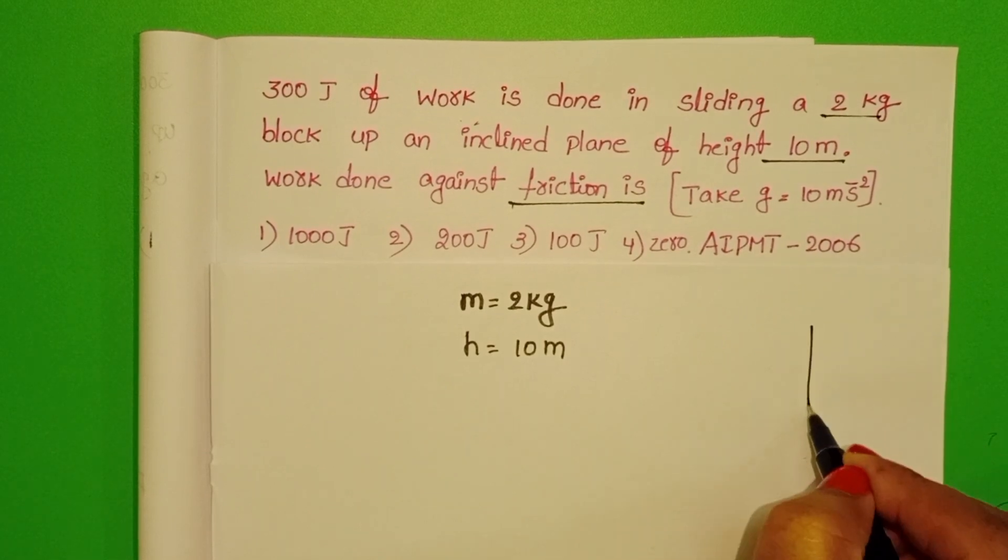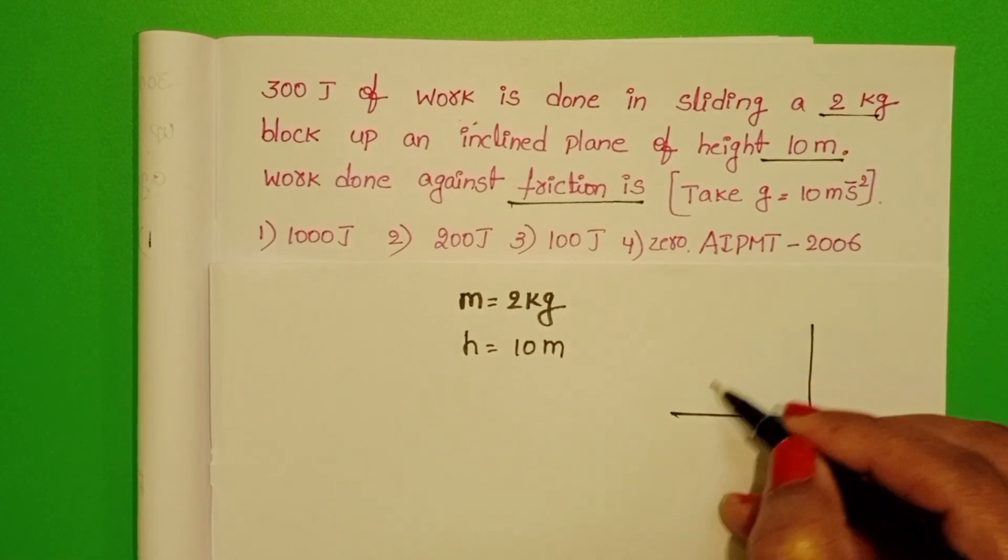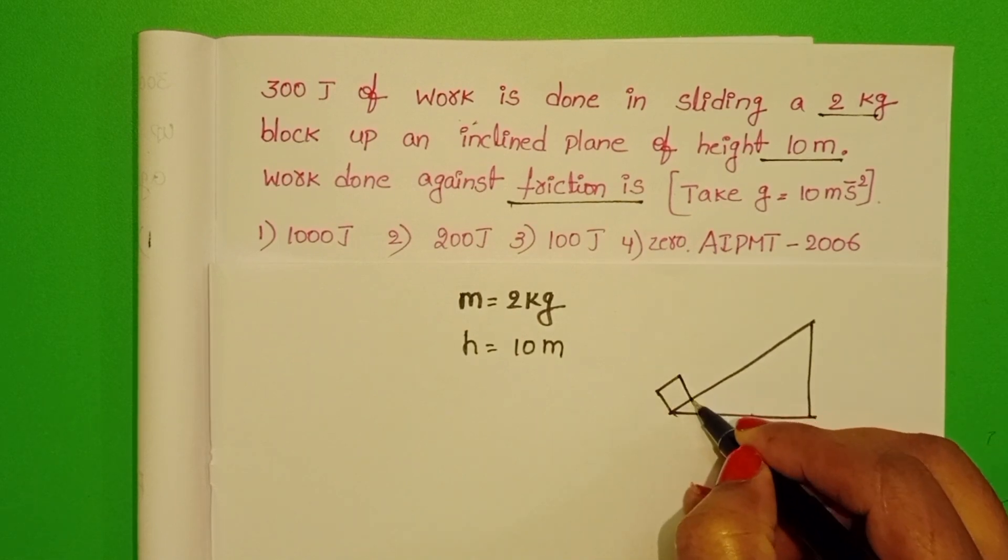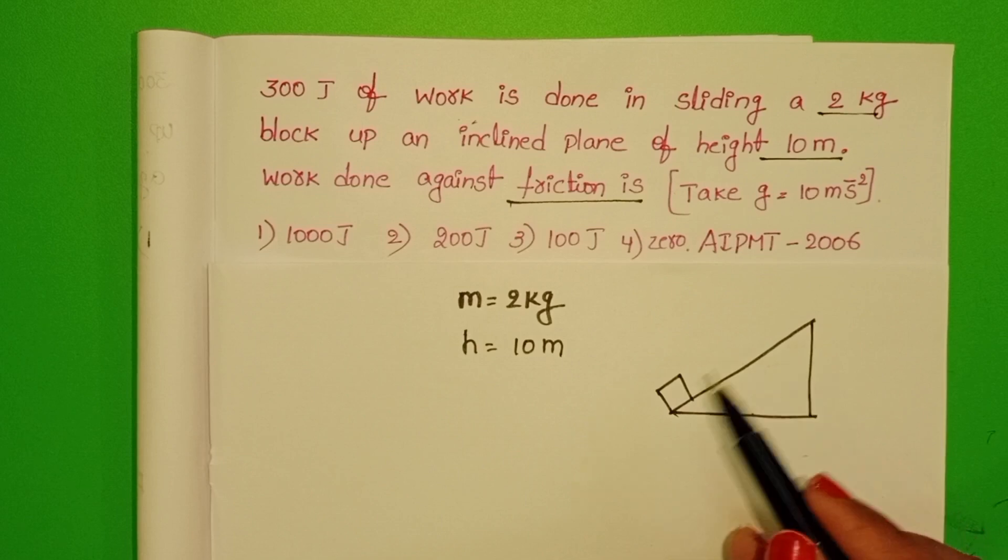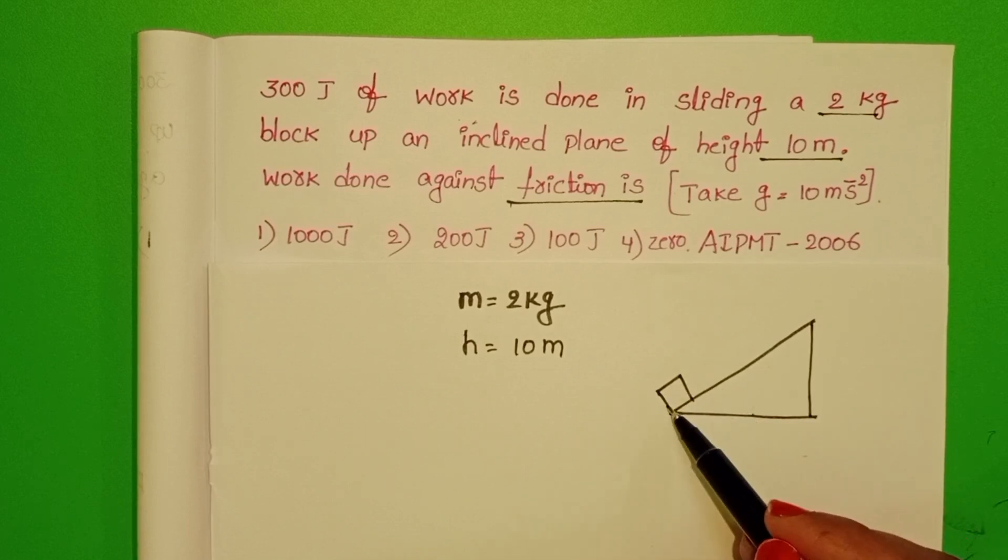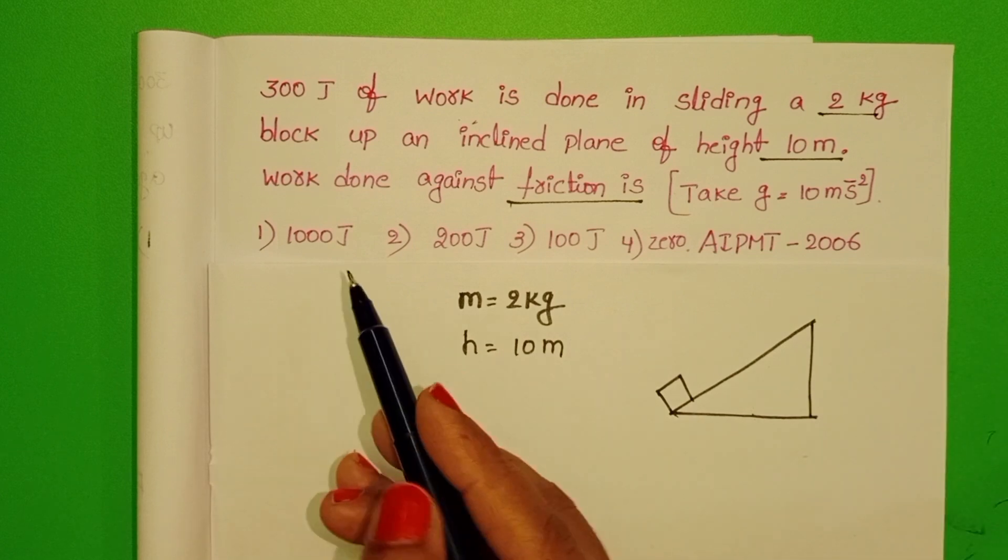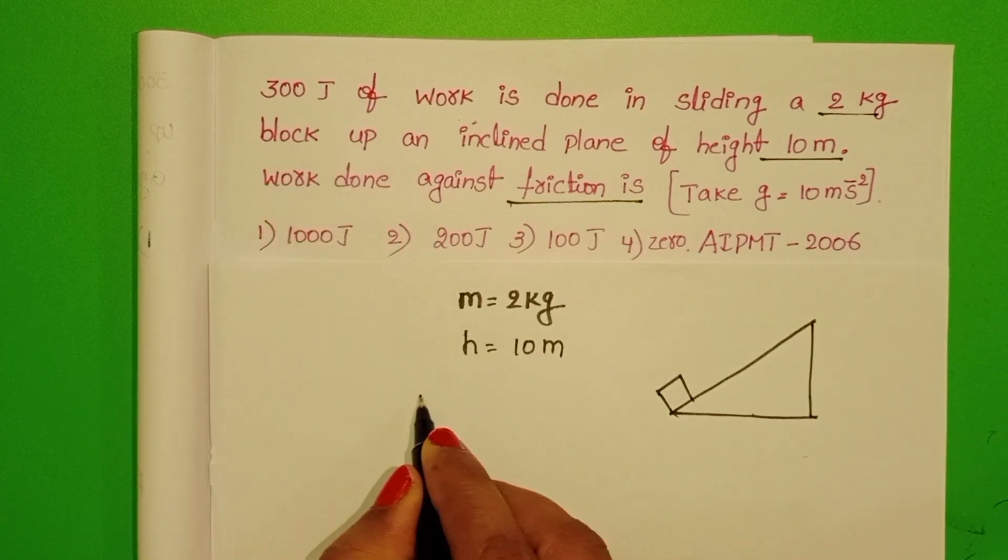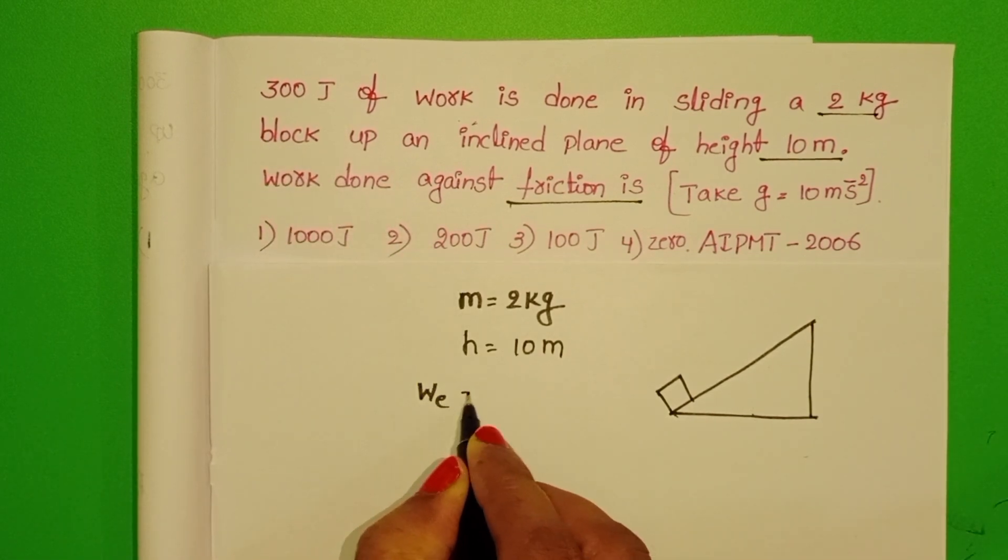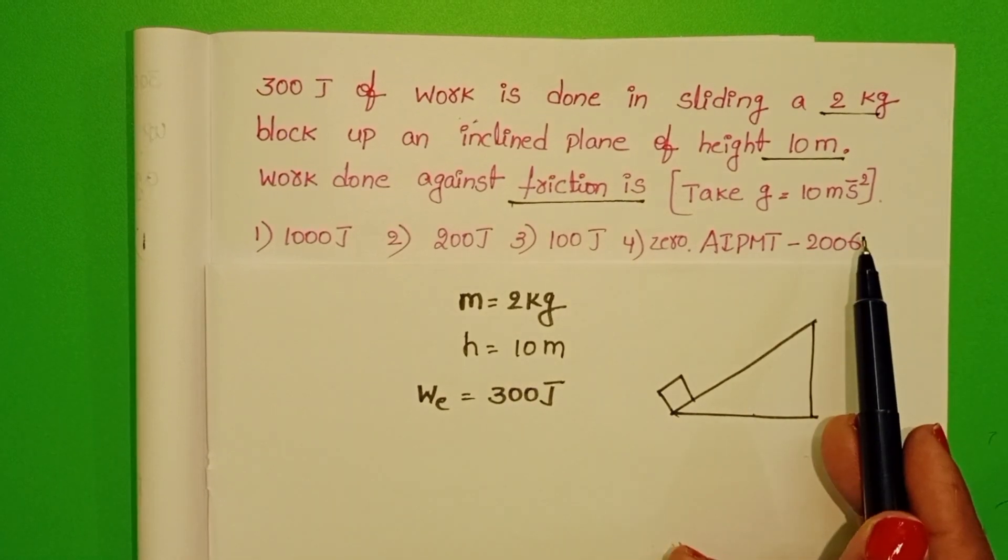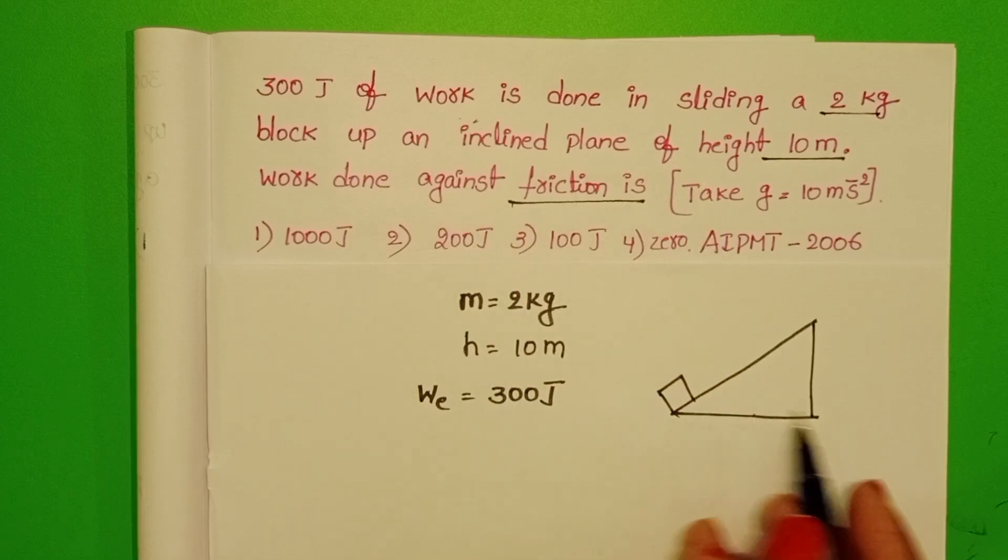Draw the inclined plane. Initially when the block is at the bottom of the inclined plane, this block slides in upward direction by applying an external energy of 300 Joules. We have to find out work done against friction.